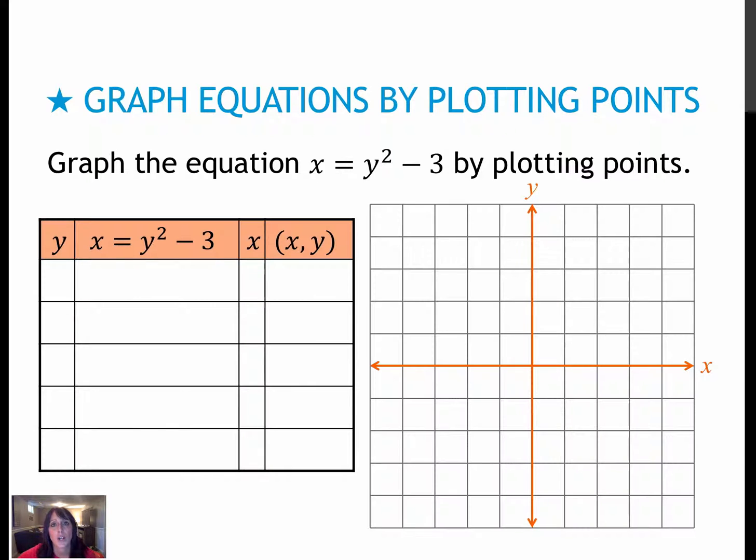Here's one for you to try on your own. Before you graph it on your own, I want to point out a couple of things. x is isolated here, which means you're going to make up values for y instead of x. And it is quadratic. So we know a quadratic, when it was y equals, looked like this. So when it's x equals, it's going to look like this. So just to give you an idea of what this shape should end up looking like. So press pause, make up some values for y, graph your parabola, and then press play to check your work.